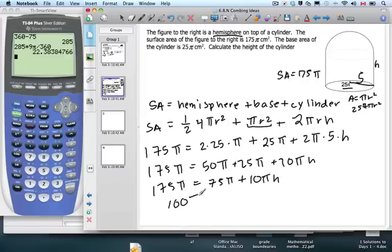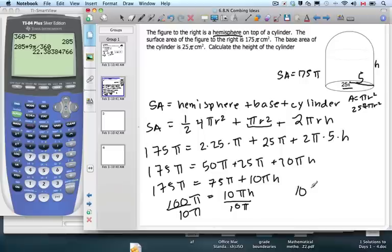All those pis make me get hungry. Cake. I like cake better than pi. 100 pi divided by 10 pi, and we get 10. Pis cancel. 10 is the height. Oh, that was so easy. But it is in centimeters. That's it.